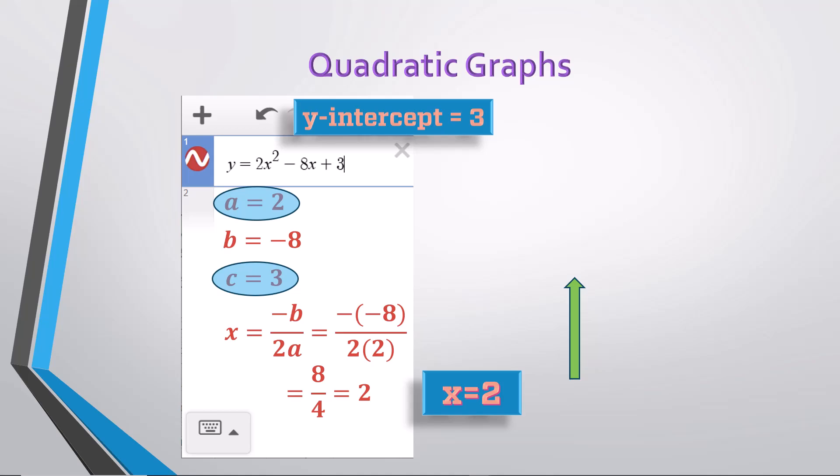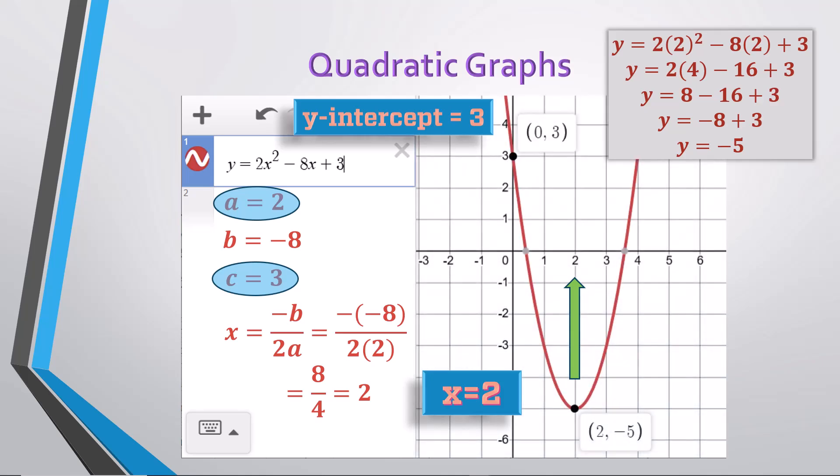We find the y value of the vertex by substituting x into the equation and working it through to find y to be negative 5. We show the graph, and indeed, we are correct for all these values. The y-intercept is at the point 0, 3, and the x and y values of the vertex are 2 and negative 5, which means the axis of symmetry is the vertical line x equals 2, and the minimum value of the graph is the y value of the vertex, negative 5.